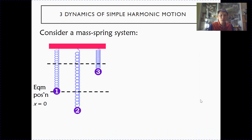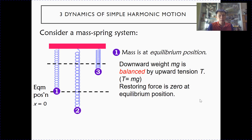We can consider a mass-spring system. At position one, the equilibrium position, the downward weight is balanced by the upward tension, so at this position tension is equal to mg. At this position there is no restoring force because tension equals mg — there is no net force.